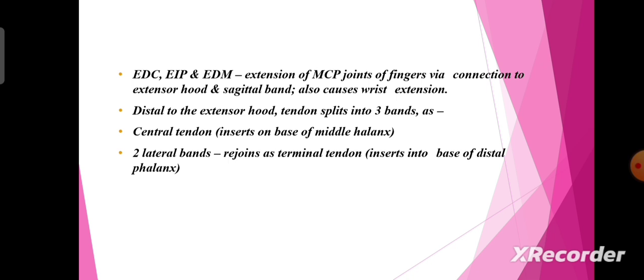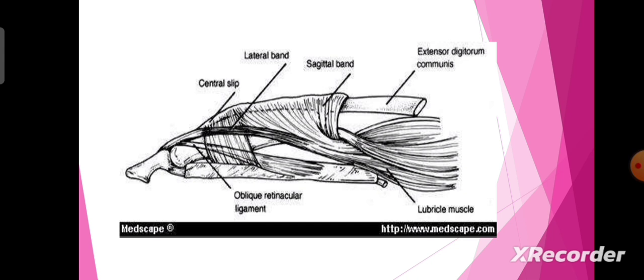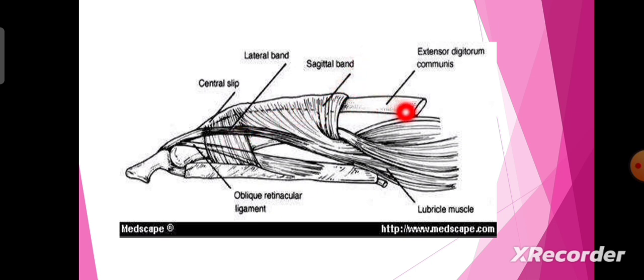This figure represents the various bands present in the finger. This is the central slip, this is a lateral band, this is the sagittal band, and this is the extensor digitorum. Thank you.